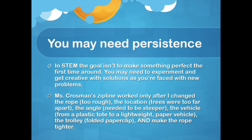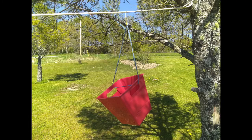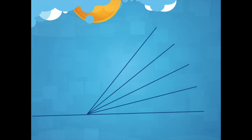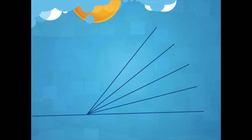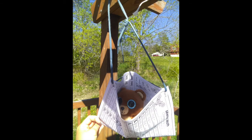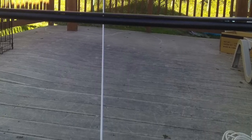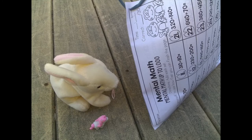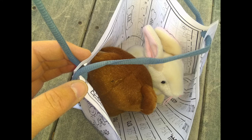With today's challenge you may need persistence. In STEM, the goal isn't to make something perfect the first time around. You may need to experiment and get creative with solutions as you're faced with new problems. My zipline worked only after I changed the rope — originally it was too rough. Changed the location, the trees were too far apart. Changed the angle, it needed to be steeper. Changed the vehicle from a plastic tote to a lightweight paper vehicle. Changed the trolley — I ended up using a folded paper clip. And made the rope tighter. In the end, Bruce was successful with his mission and then all three of them went for a ride together.